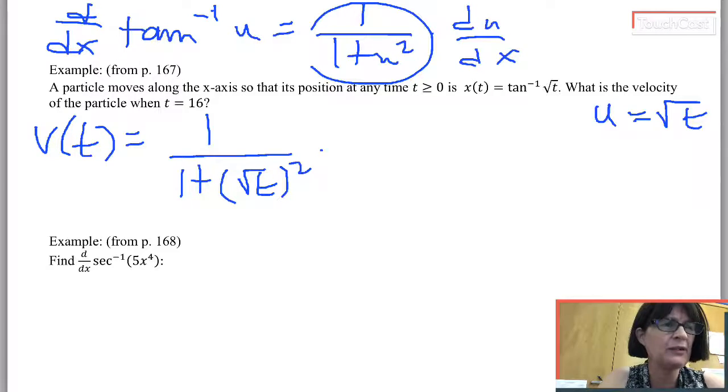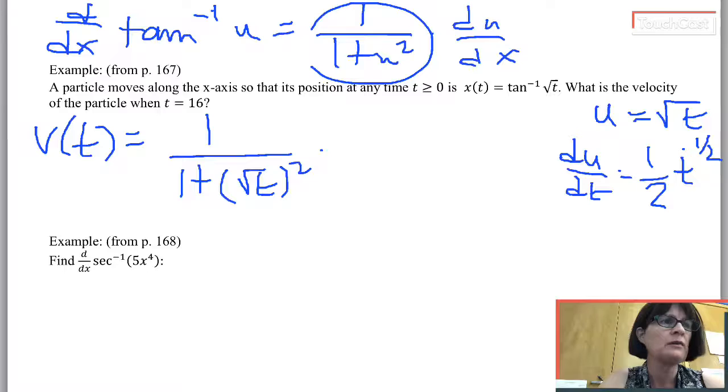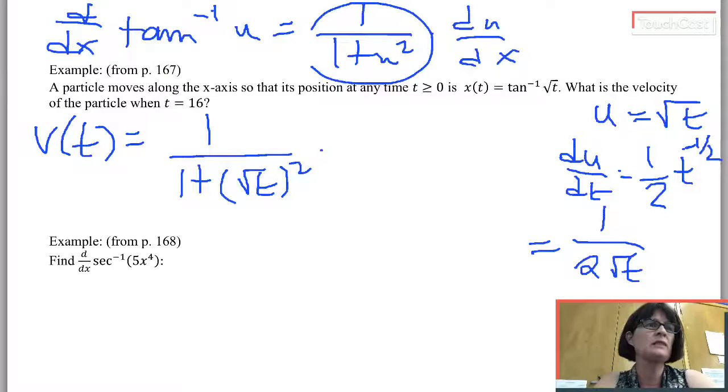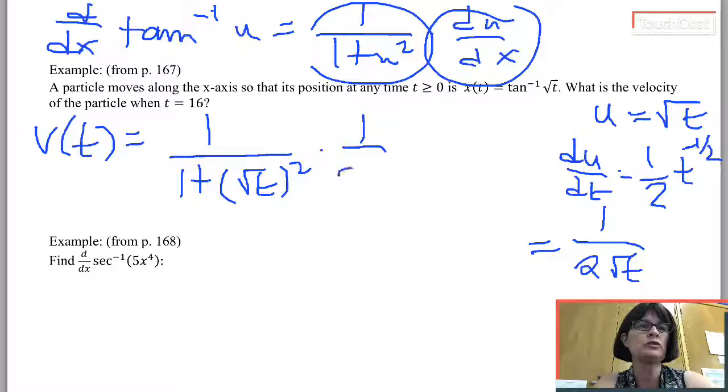Well, I'll just come over here and make sure that I remember how to find du dt. That's going to be 1 over 2t to the negative 1 half, or that's the same as 1 over 2 square root of t. So that's the chain rule part of what I need. I'm going to need to multiply by, in this case, du dt, so 1 over 2 square root of t.